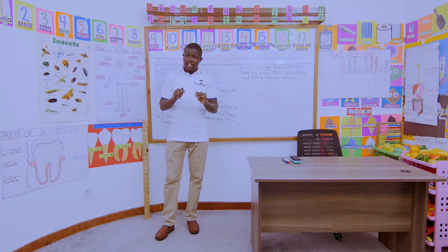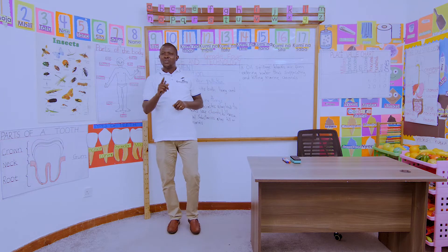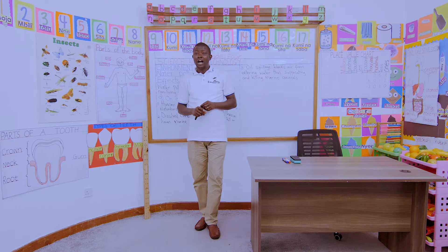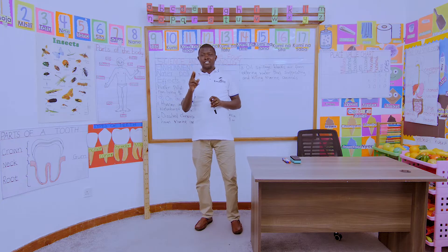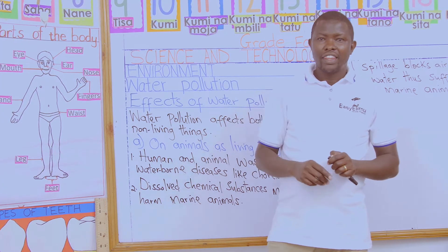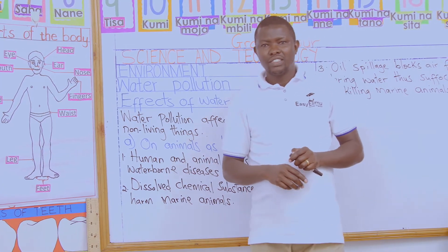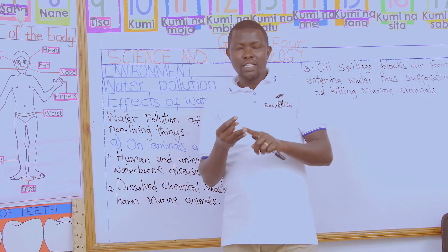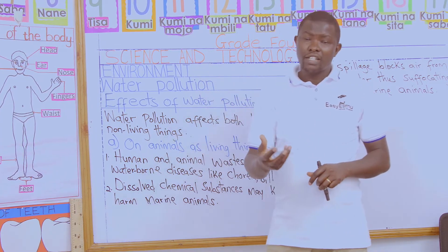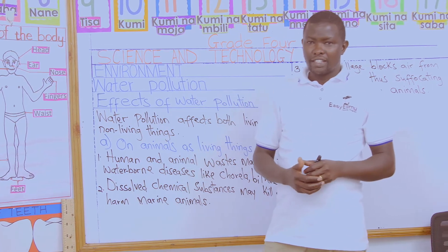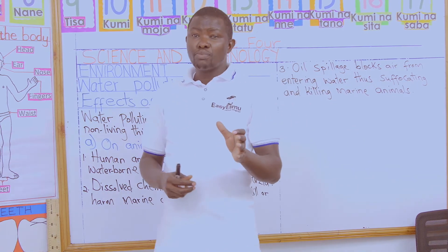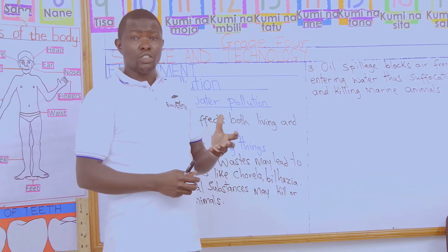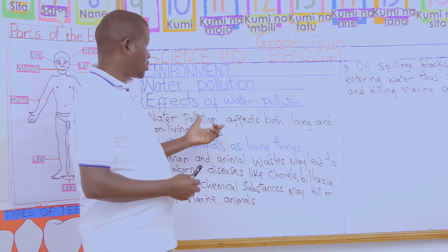Fish are dying. So we say water pollution affects living things — and living things include both animals and plants. It also affects non-living things. Today we would like to observe the effects of water pollution on animals.